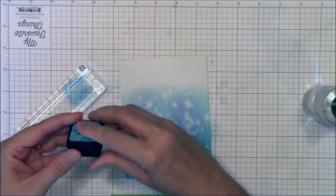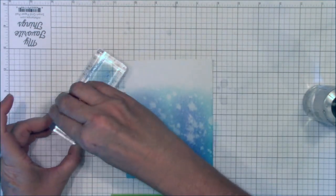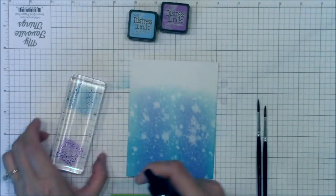Then I'm adding some Salty Ocean and Seedless Preserves to an acrylic block and I'll add some more water to loosen the color a bit.